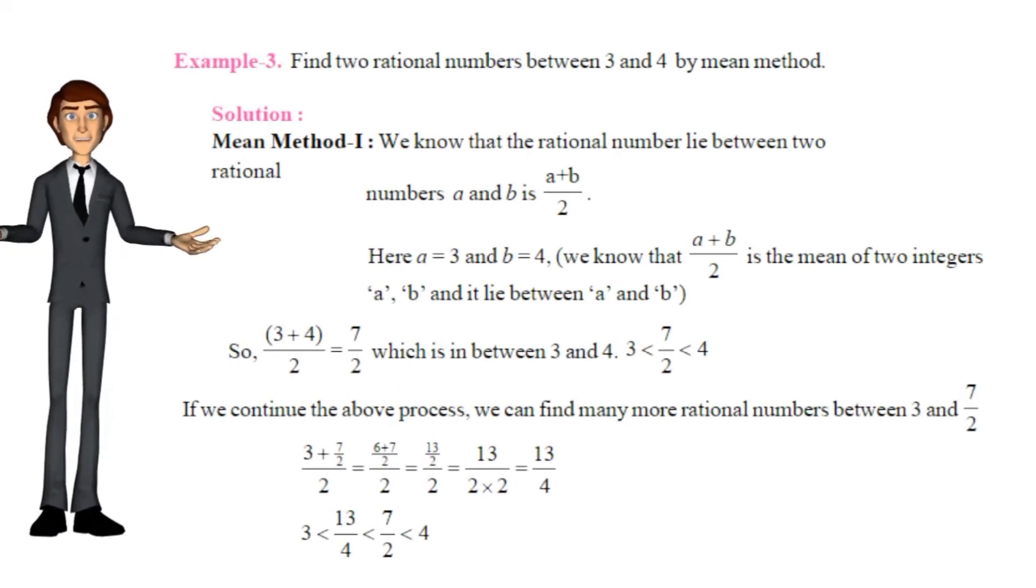Let us see the solution at a glance. How to explain. So, 3 plus 4 by 2 is equal to 7 by 2.